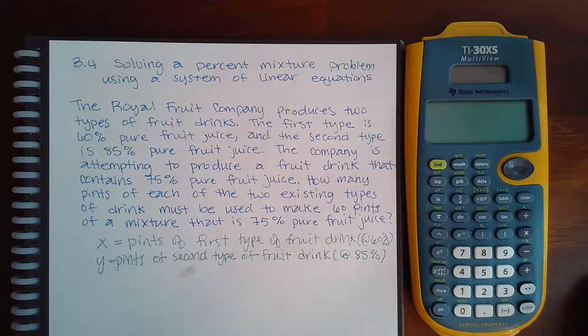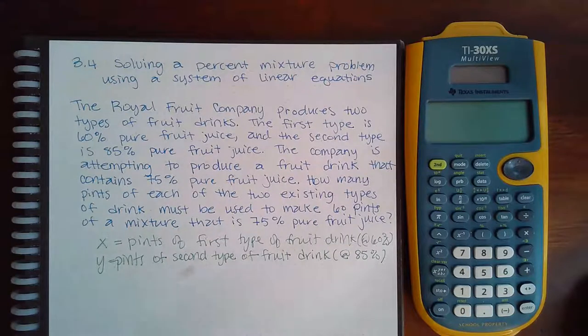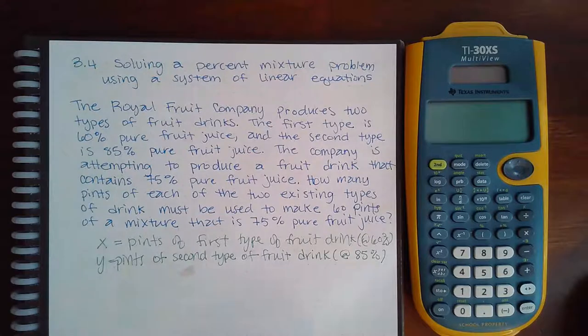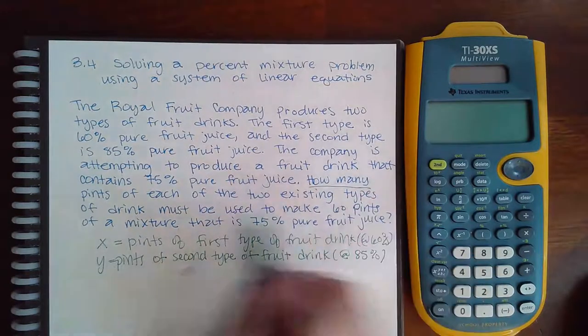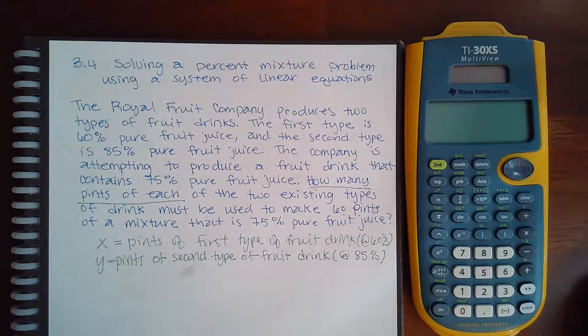How many pints of each of the two existing types of drink must be used to make 60 pints of a mixture that is 75% pure fruit juice? So our first equation is going to be the number of pints used and the second equation is going to be the mixtures of everything. Because they're asking how many pints of each of the two existing types of drink, those are going to be my variables.